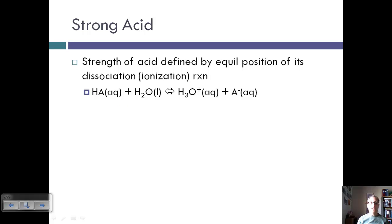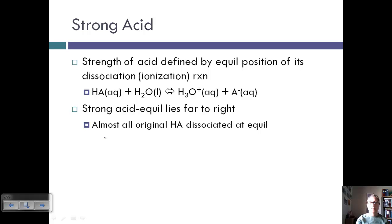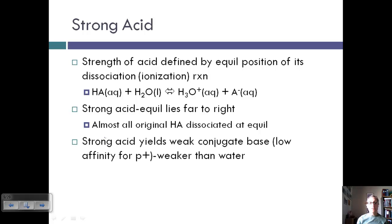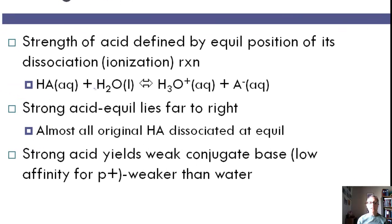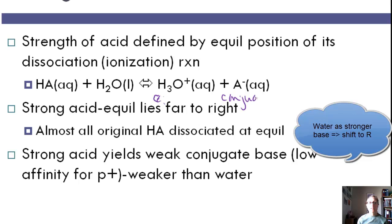Let's take a look at the standard acid-base equation we've been examining. In a strong acid, the equilibrium lies very far to the right, toward products, because almost all of the original acid has dissociated — a strong acid completely dissociates. A strong acid will also yield a weak conjugate base, meaning it has a low affinity for protons and is weaker than water.